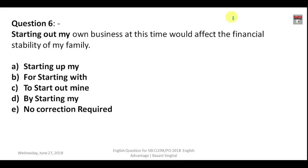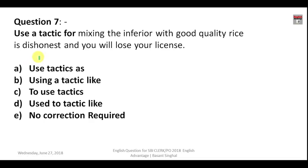Question number six is a phrase replacement question: 'Starting out my own business at this time would affect the financial stability of my family.' In the context of business, we do not say 'starting out' — we say 'starting up'. 'Starting out' is generally used with reference to a journey. You must have heard about startups. So the correct option is A — starting up.